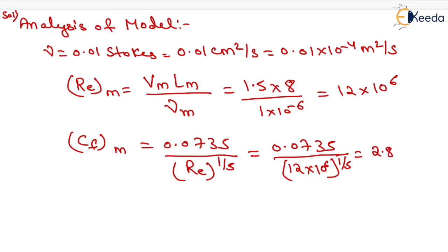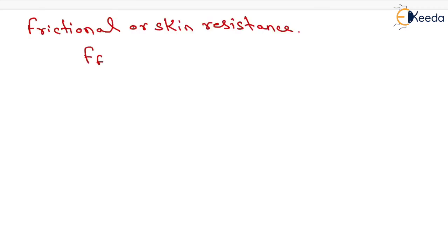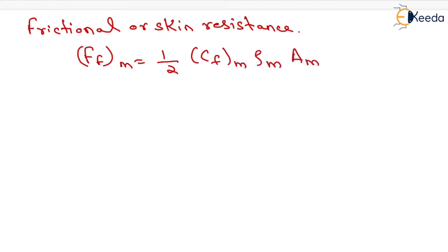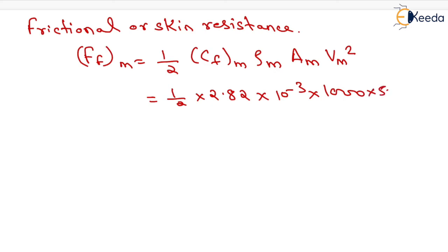Now frictional or skin resistance equals half of Cf for model, rho for model, area for model, and velocity for model squared. Putting in all values: half of 2.82 into 10 to the power minus 3, into 1000, into 5, into 1.5 squared. On solving this we get the frictional or skin resistance of model equals 15.869 Newton.